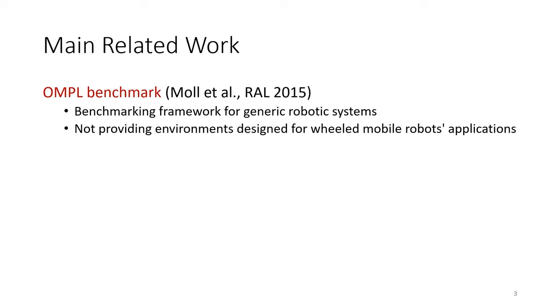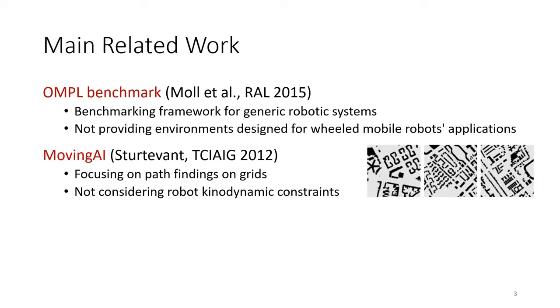The Moving AI benchmark provides various grid environments, such as the city's dataset, which we also support in this work. It focuses on grid-based path planning and does not account for the kinodynamic constraints that wheeled mobile robots impose.